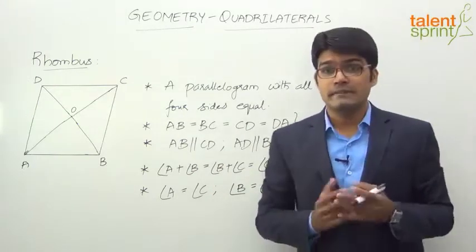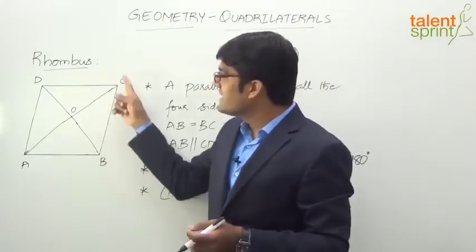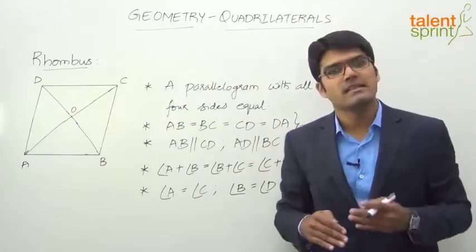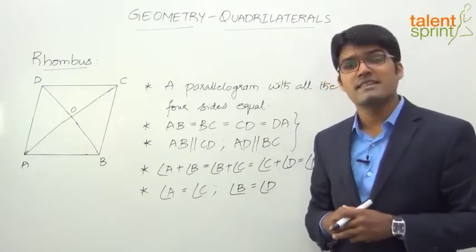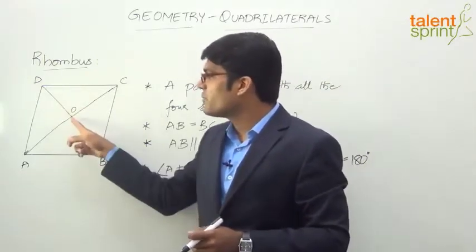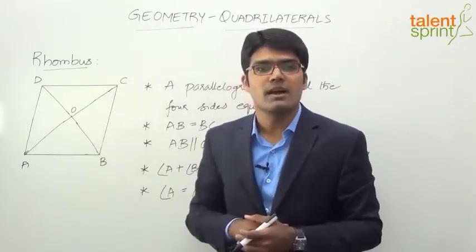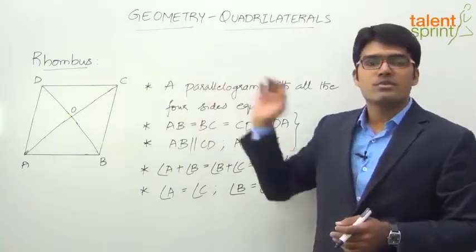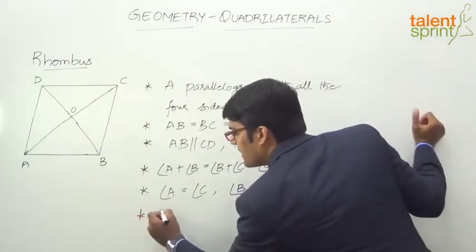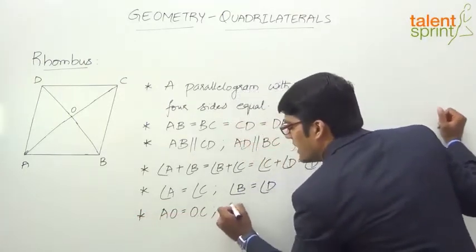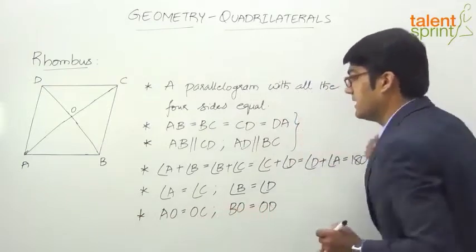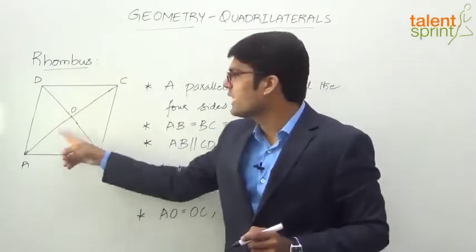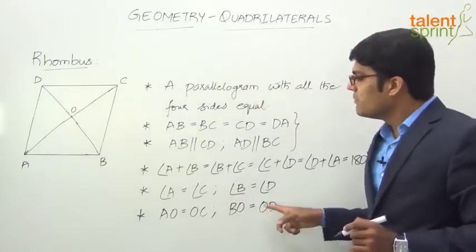Now let us talk about the diagonals. The diagonals AC and BD intersect at point O. In case of a rhombus, the diagonals bisect each other — meaning point O divides each diagonal into two equal halves. So AO equals OC and BO equals OD. It is important to note that in a rhombus, the diagonals are not equal to each other, but they do bisect each other.